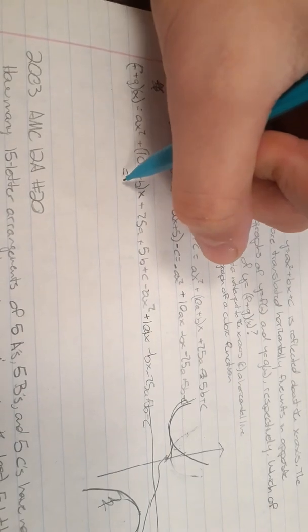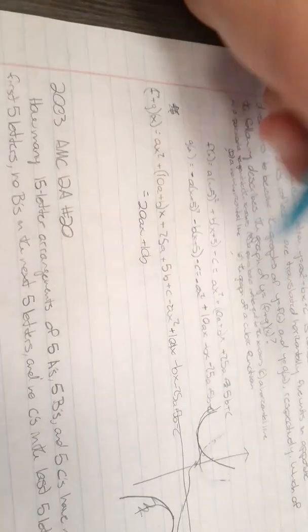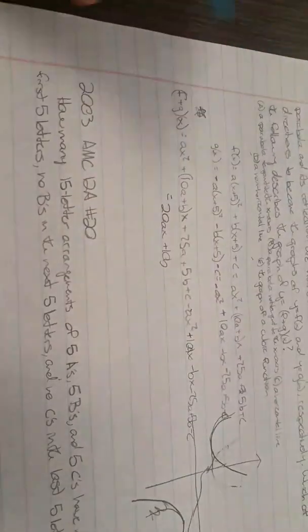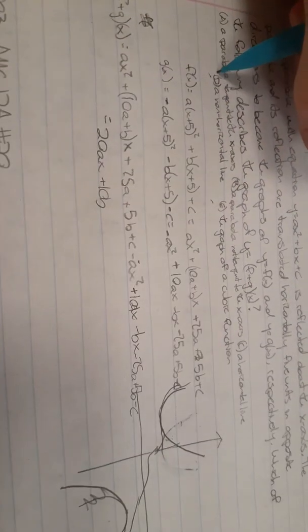All of that is going to really cancel out, except for 20ax plus 10b. And as you can see over here, that is a non-horizontal line. So your answer is going to, in fact, be D. Thank you much for watching, and goodbye.